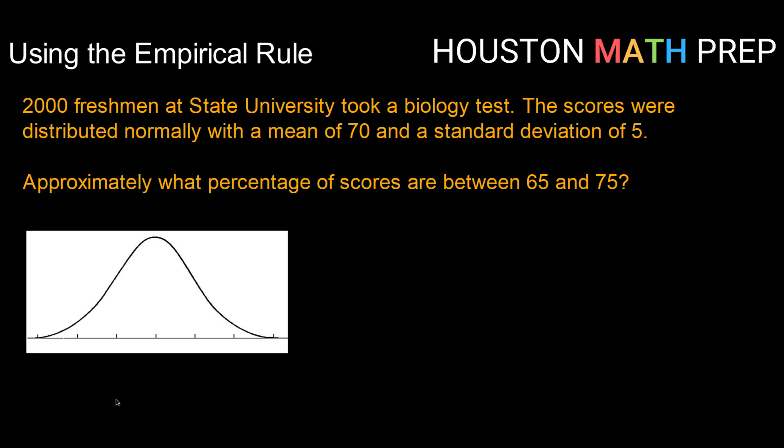So here's our setup. 2,000 freshmen at State University took a biology test. The scores were distributed normally with a mean of 70 and a standard deviation of 5. Using that information, approximately what percentage of scores are between 65 and 75?